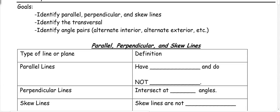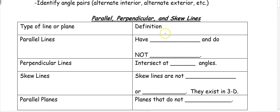This video is about identifying parallel, perpendicular, and skew lines, identifying the transversal, and identifying angle pairs. First, let's talk about what parallel lines, perpendicular, and skew lines are. Parallel lines are lines that have the same slope and they do not intersect.